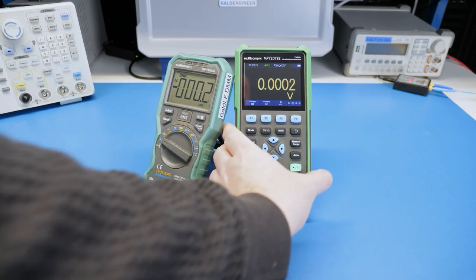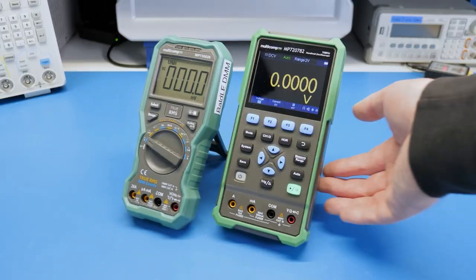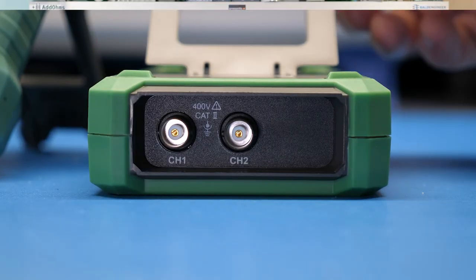Physically, the handheld DMM is larger than a traditional DMM. The crisp color LCD is great to look at, but there is no mode select knob. Also there are BNC connectors on the top.